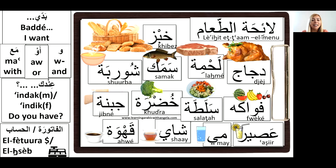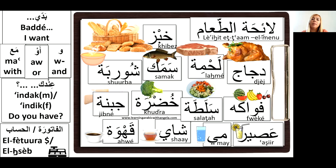Notice how we change the qaf in Lebanese to a glottal stop — that is if you're able to read the Arabic letters. We often swap some letters for other letters, some sounds for other sounds. So using these words with 'baddi': 'baddi khibiz u shorba' — we can use the conjunction 'u' for 'and.' We can also use 'aw' meaning 'or,' and 'ma' meaning 'with.' For example: 'baddi jayj aw lahme' — I want chicken or meat; 'baddi jayj ma khudra' — I want chicken with vegetables.